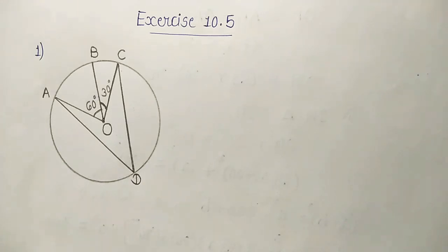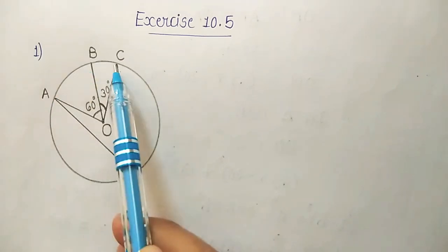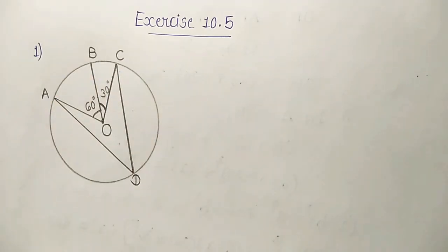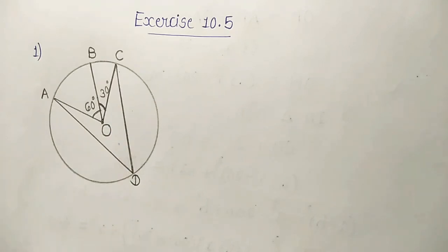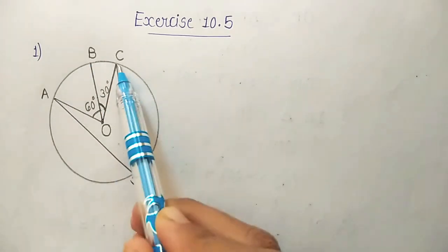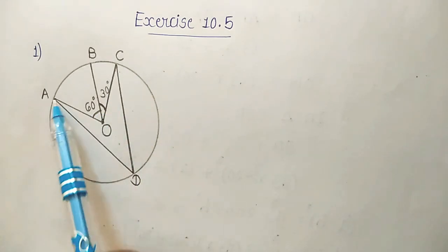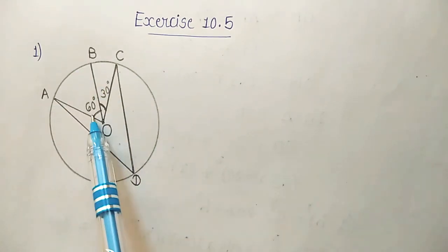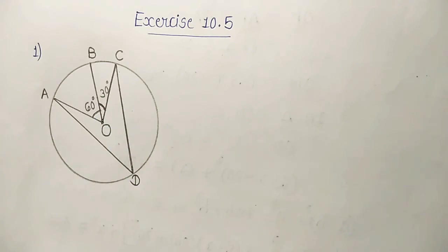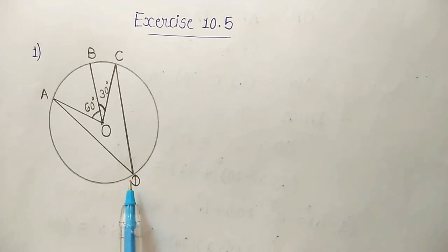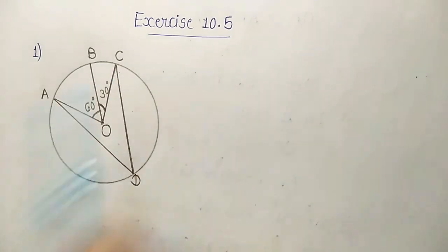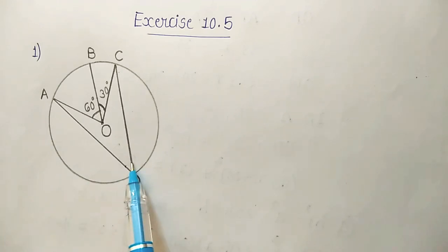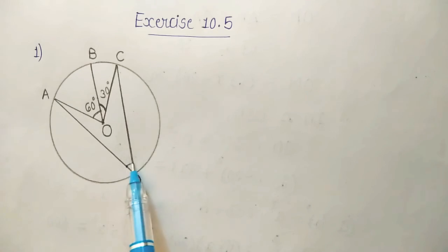Question number 1. In figure, A, B and C are 3 points on a circle with center O, such that angle BOC is equal to 30 degrees and angle AOB is equal to 60 degrees. If point D is there on the circle other than arc ABC, then find the value of angle ADC.